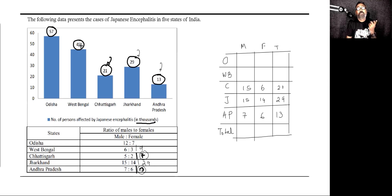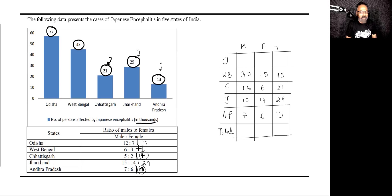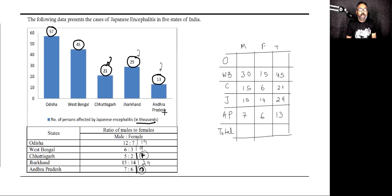For West Bengal: 6 plus 3 is 9, but we have 45 — 9 times 5 is 45. So male is 30 and female is 15, giving 45. And for Odisha the ratio adds to 19. 19 times 3 is 57, so you're multiplying by 3: male is 36, female is 21, total is 57.